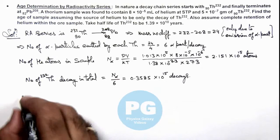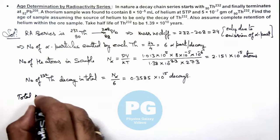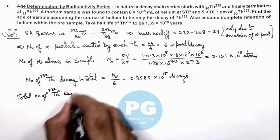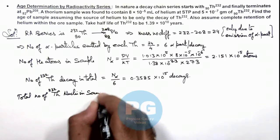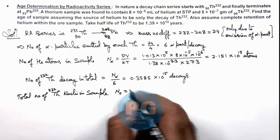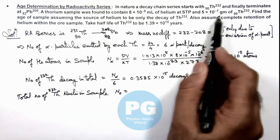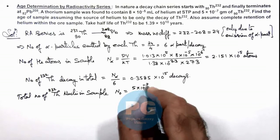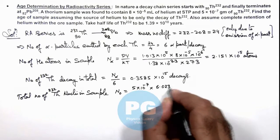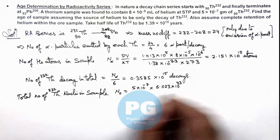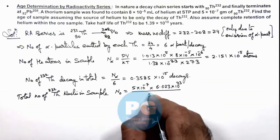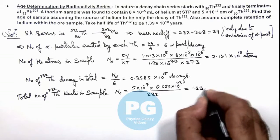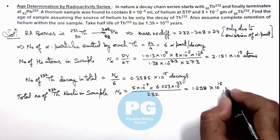And if we calculate total number of thorium nuclei in sample, then we can calculate it as N_0. We are given the mass 5×10^-7 gram of thorium, so this will be 5×10^-7 multiplied by Avogadro number divided by its mass number that is 232, which is coming out to be 1.298×10^15 nuclei.